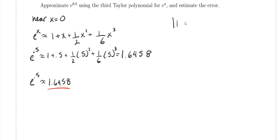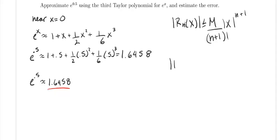Now for the error: the formula says the absolute value of the error is less than or equal to M over (n+1) factorial times the absolute value of x^(n+1). For our third degree polynomial, R_3(x) is less than or equal to M over 4 factorial times 0.5 raised to the fourth power.